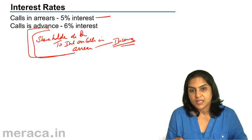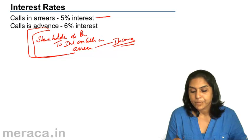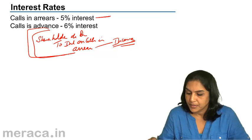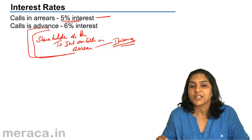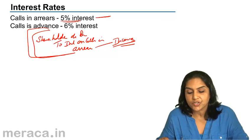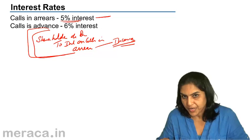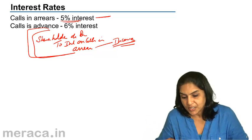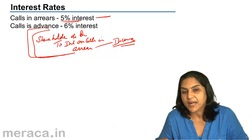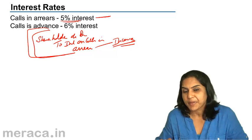Calls in advance is at the rate of 6%. The rate of interest for calls in arrears or calls in advance is mentioned in the articles of association of a company. If the company has not mentioned the same in its articles, or if it has not prepared an articles of association, Table A of the Companies Act becomes applicable.